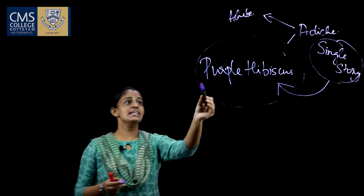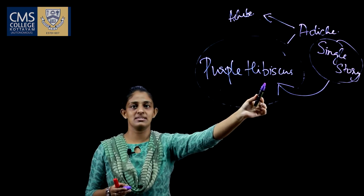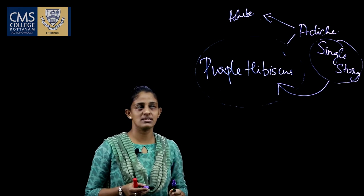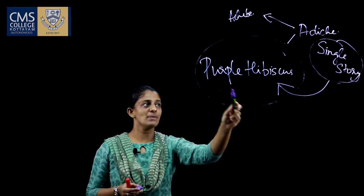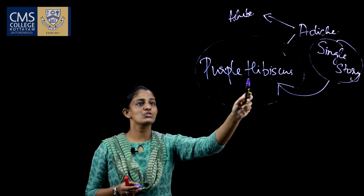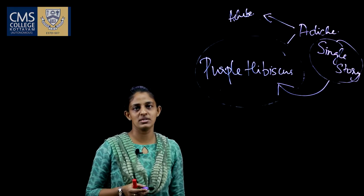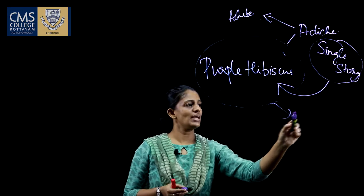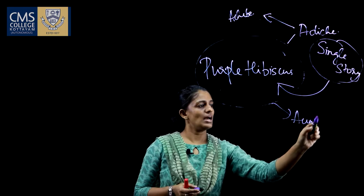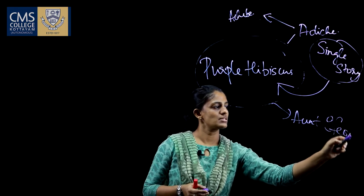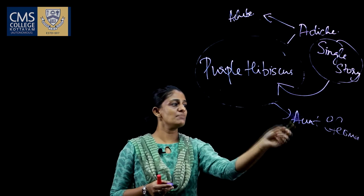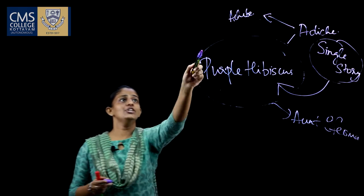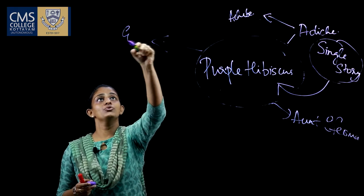Now, as the name suggests, Purple Hibiscus — I am sure most of you would have seen red hibiscus and not a purple hibiscus. So this was basically a hybrid variety which was found at Aunt Ifeoma's house. Aunt Ifeoma is one of the major characters mentioned in Purple Hibiscus, and it is from Aunt Ifeoma's house that the Purple Hibiscus was brought into Eugene's house.